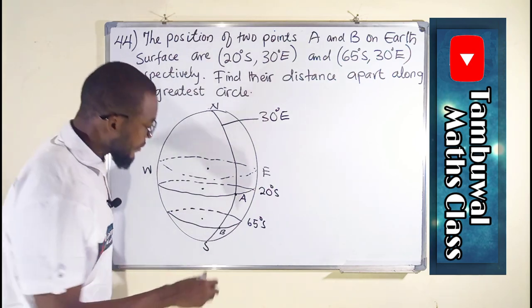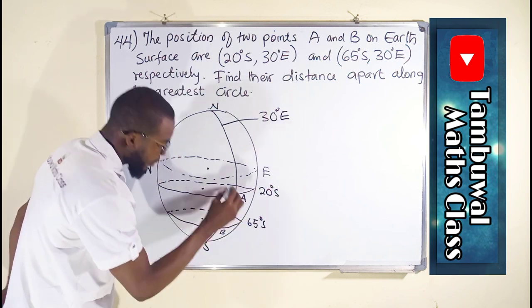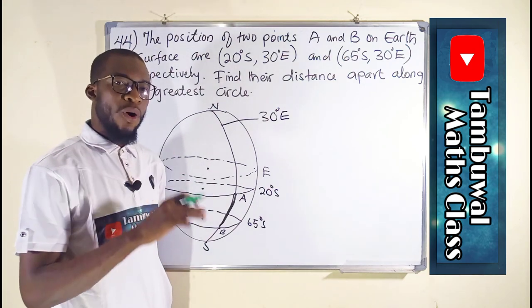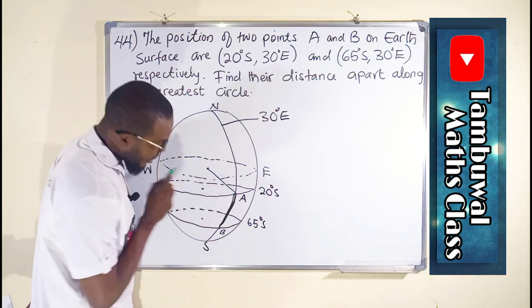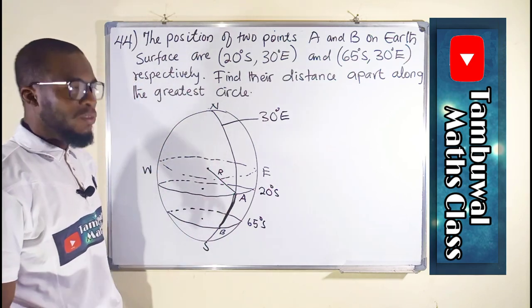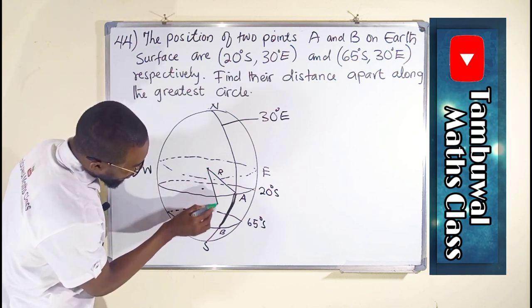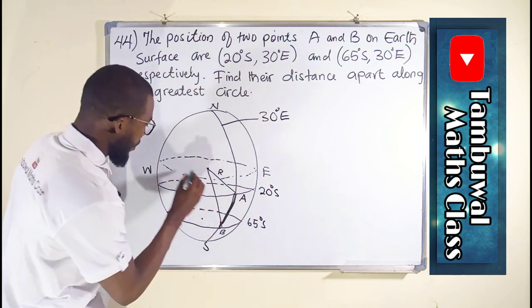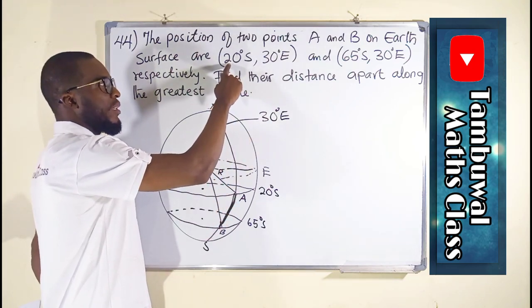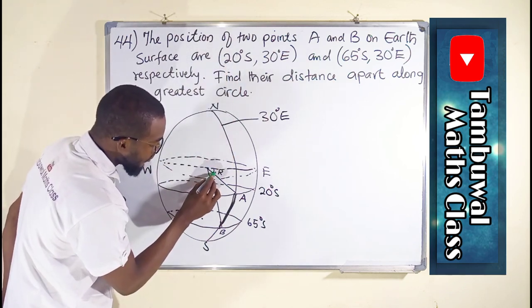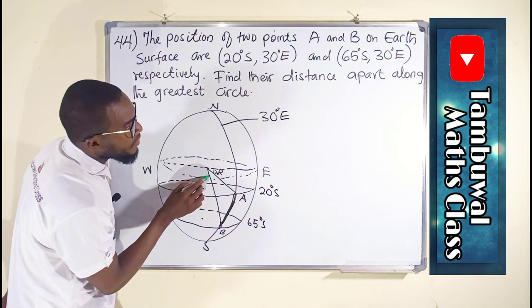The question asks us to find the distance apart between these two points. Both points are formed from the greatest circle. From the center to the surface is R, which is capital R, approximately 6,400 kilometers. We are told the first point is 20 degrees south, so from the origin to point A is 20 degrees, and from the origin to point B is 65 degrees.